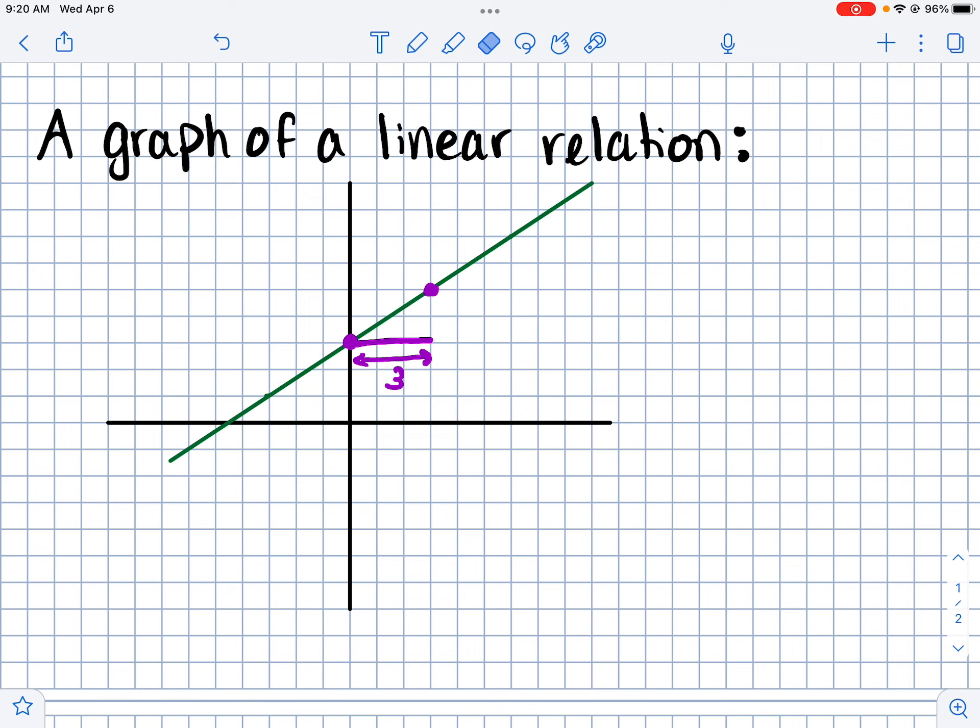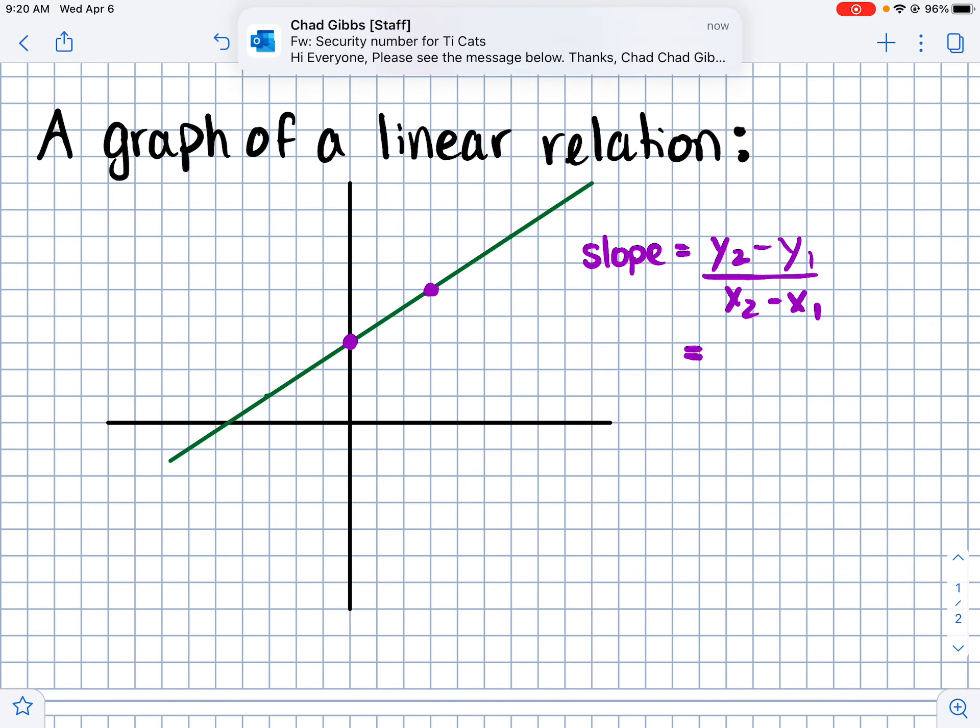But if we want to try a different way, then we could use that equation that we just learned about. So that slope equals y2 minus y1 over x2 minus x1. So all I need are two coordinates. So I know this coordinate here could be represented as x is 0 and y is 3. So 0, 3. And I know this one up here would be 1, 2, 3 on the x-axis and 1, 2, 3, 4, 5 on the y-axis. So 3, 5.